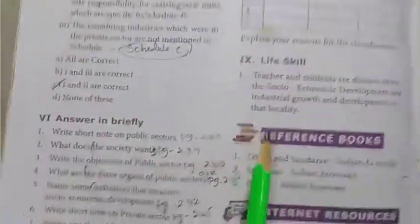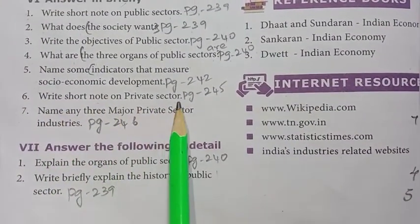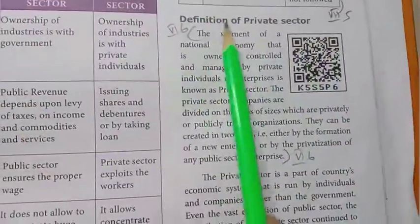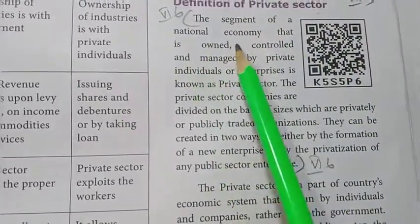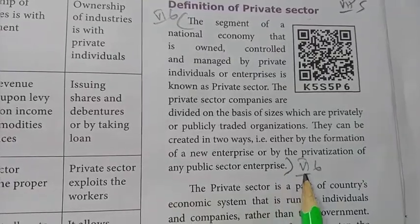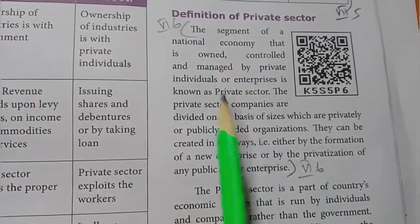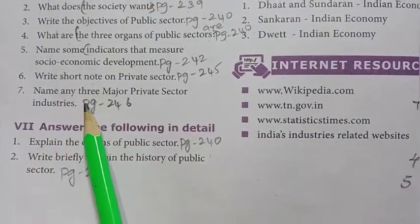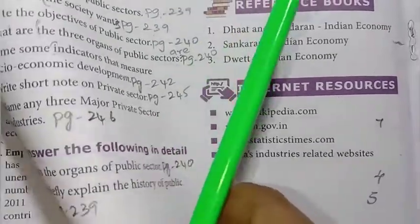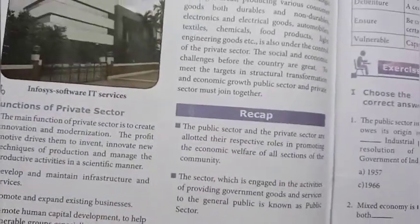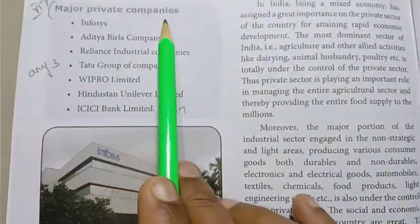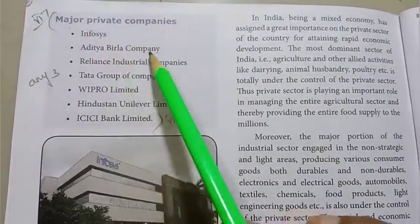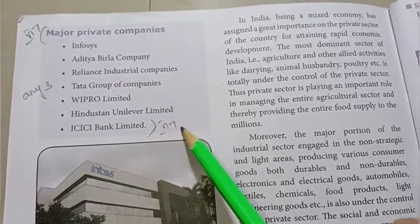Sixth one: write a short note on private sector. Refer to page number 245, under the definition of private sector — the segment of a national economy. Write that paragraph for the answer. Seventh one: name any three major private sector industries. Refer to page number 246 and write any three major private companies from the points given.